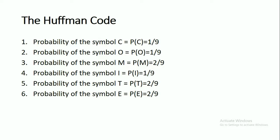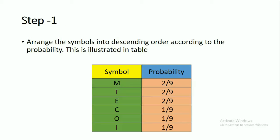The first step in Huffman coding is to arrange the symbols in descending order according to their probability — that is, from high probability to low probability. When arranging the symbols in descending order, the first symbol is M, next T, then E, C, O, and the last symbol is I.